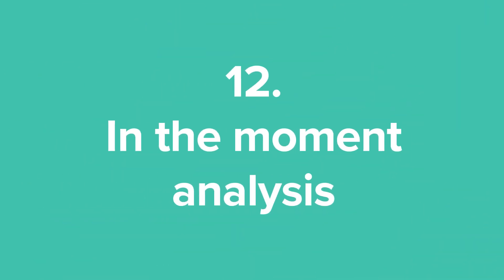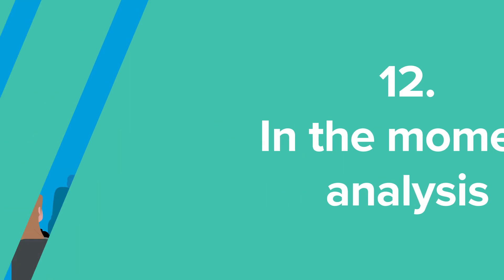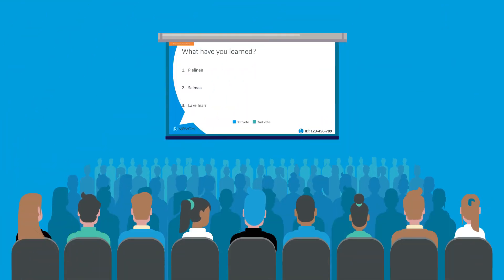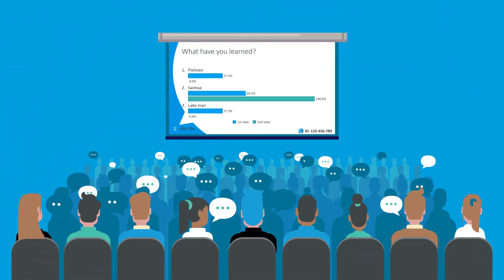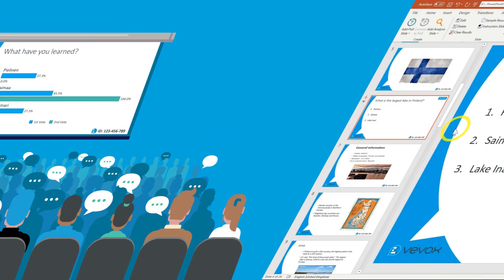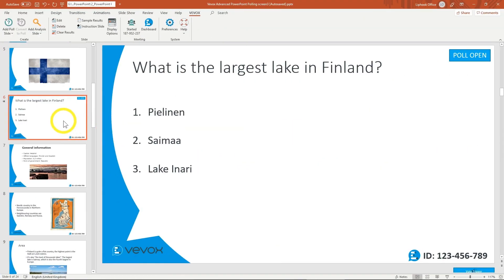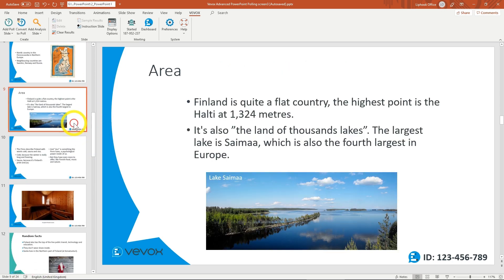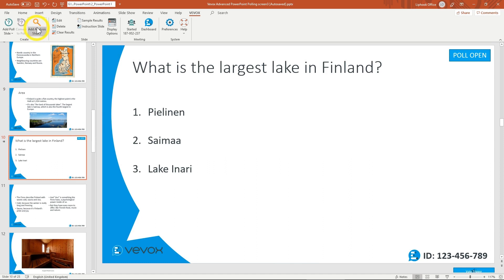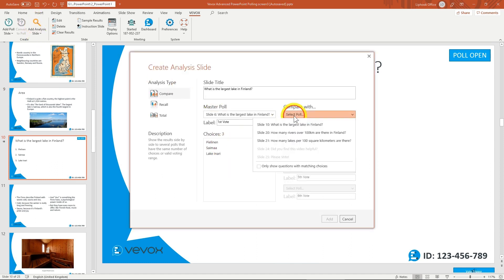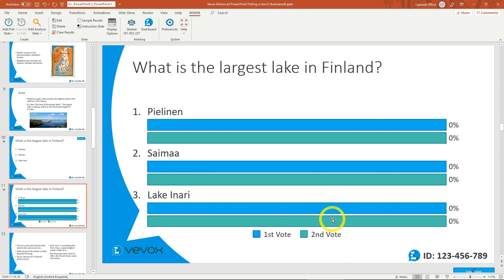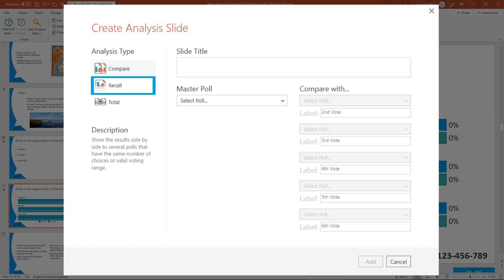Tip 12: In the moment analysis. Analysing your data without breaking the flow of your presentation is super engaging and takes seconds to set up. The before-and-after question is the most commonly used — it allows you to ask the same poll at two points in a presentation, then compare the results on one slide to show knowledge retention or shifting opinions. Other options include recalling past polls or totalling a series of polls.